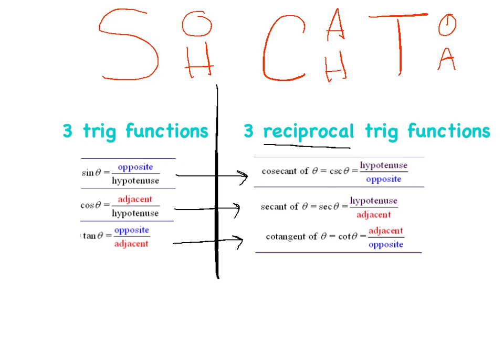Lastly, the reciprocal of tangent is cotangent, abbreviated COT. Tangent is opposite over adjacent, so cotangent is adjacent over opposite. All reciprocal means is flipping your fraction.